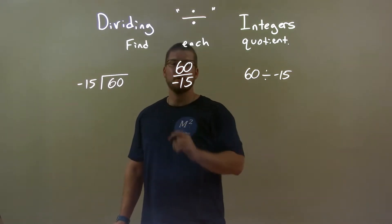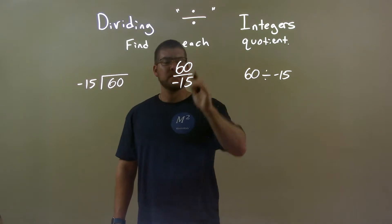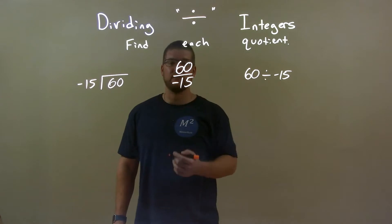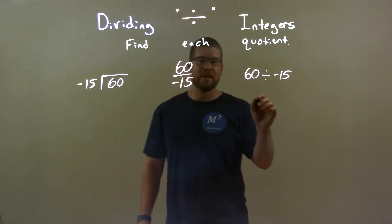Well, first I ignore the negative, okay? And I think of it just as 60 divided by 15. Well, we know 15 times 2 is 30 and 30 is half of 60. So that comes out to be 4 times, right? 15 times 4 will end up being 60 and we can see that.